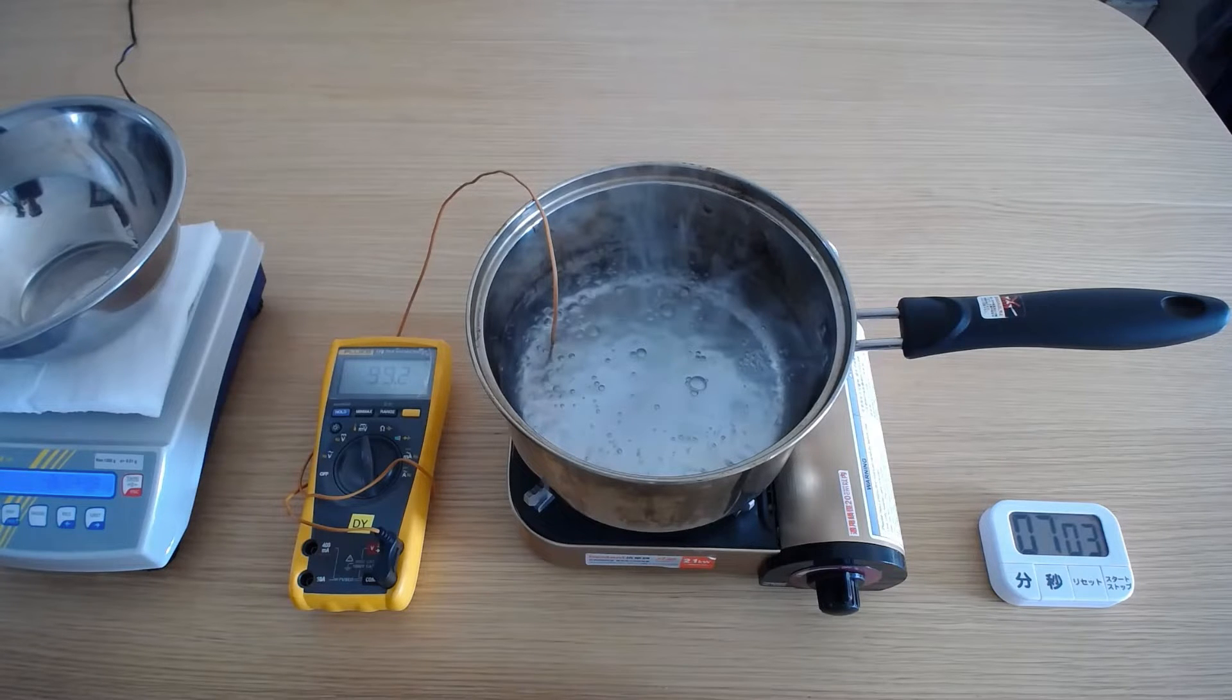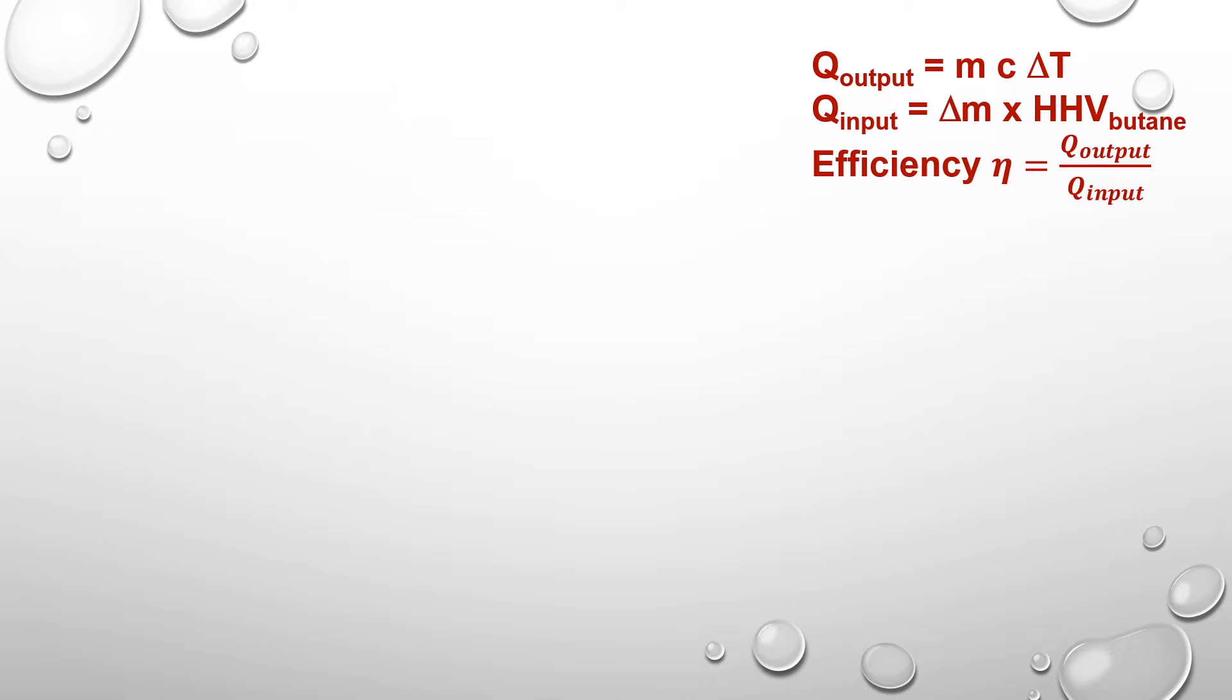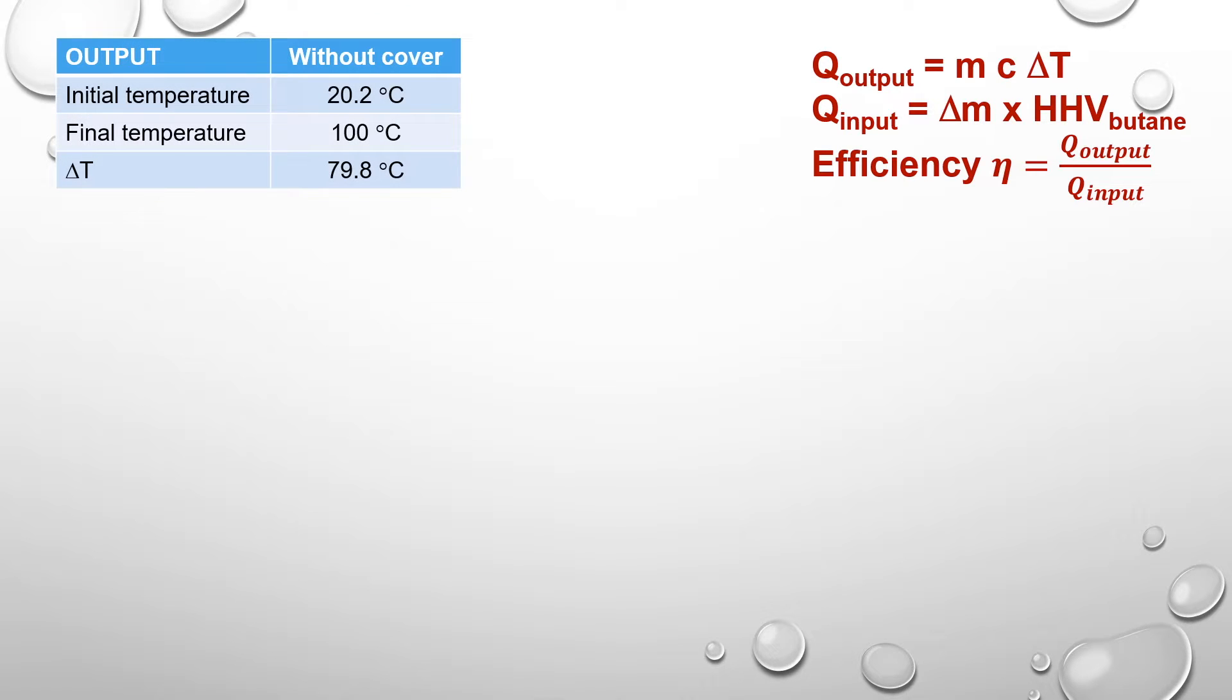We can now analyze the energy output and input. The initial temperature of water is 20.2 degrees Celsius and the final temperature is 100 degrees Celsius. As we know the mass of water and its specific heat capacity, we can estimate the output energy to be about 334 kJ.